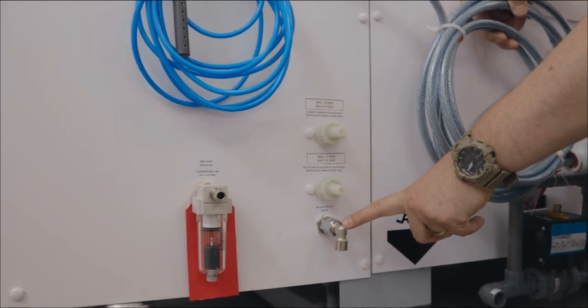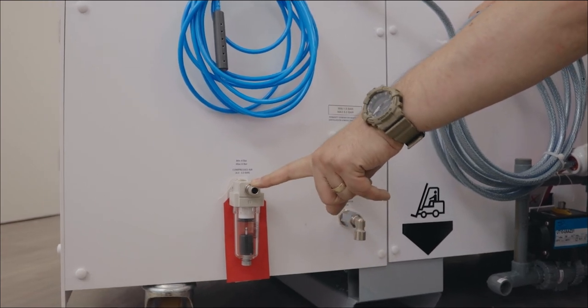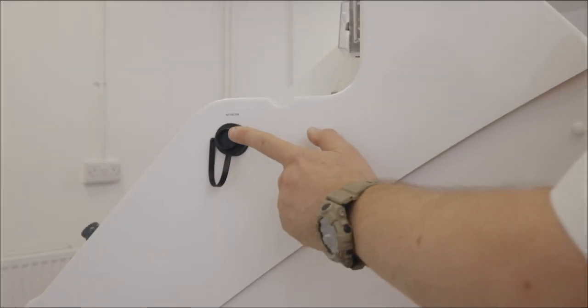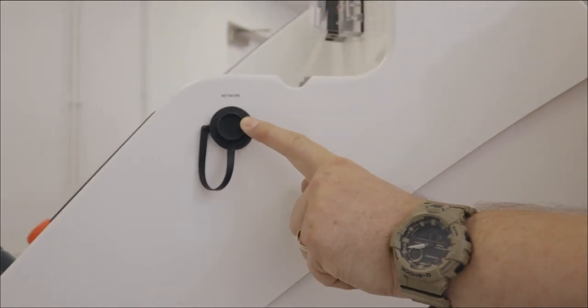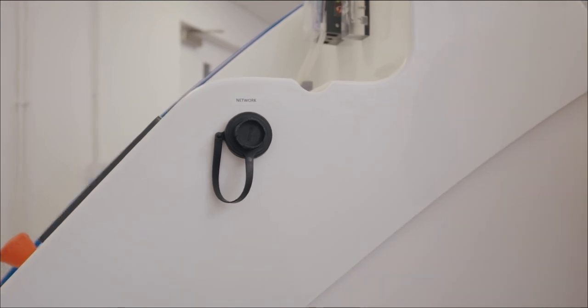We have the air saturator drain and to its left we have the compressed air inlet filter. On the right of the chamber we have ethernet socket for connection to the logging software.